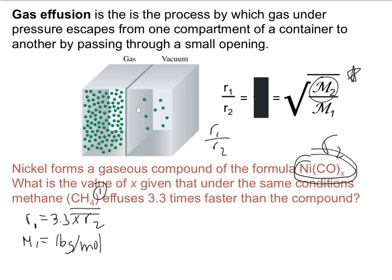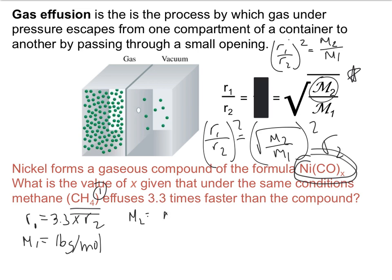If we take Graham's law and basically rearrange it and solve for M2, we take r1 over r2, that's going to equal the square root of M2 over M1. If I want to figure out what M2 is, I'm going to square both sides. That's going to give me r1 over r2 squared being equal to M2 over M1. Then if I want to get M2 all by itself, because that's the one that I don't know, I'm just going to cross multiply, and basically my M2 is going to be equal to my M1 times r1 over r2 squared.